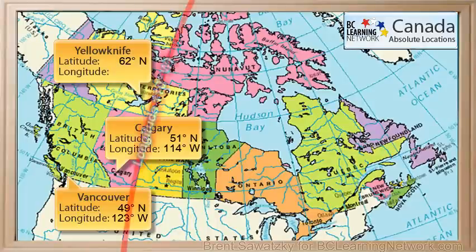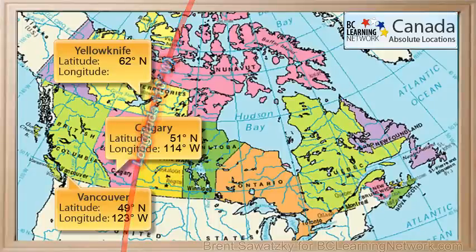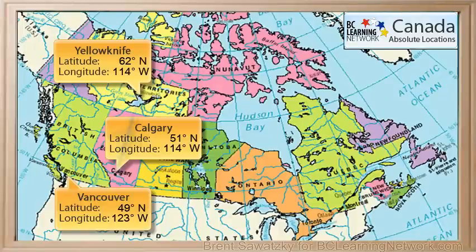See how it's about the same distance from the 110 degree line as Calgary is? In fact, Yellowknife has the same longitude as Calgary — 114 degrees west. So if you wanted to fly from Calgary to Yellowknife, you'd just head north, following the 114 degree west line of longitude.